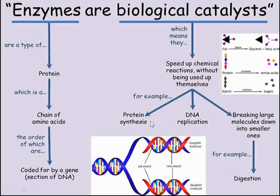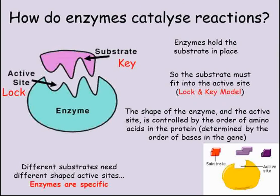Examples of the reactions that enzymes speed up and control in living things are making proteins, replicating DNA, and breaking large molecules down into smaller ones, such as in digestion. So how do these proteins speed up or catalyse reactions?